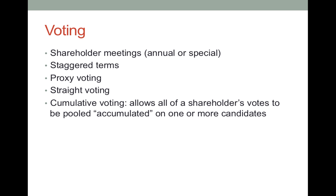Whether a corporation has staggered terms would be something contained in the bylaws. Proxy voting is when you allow someone else to vote your shares. Straight voting is simple majority voting where the majority wins on any particular vote on directors. Cumulative voting, on the other hand, allows shareholders' votes to be pooled or accumulated on one or more candidates so that it increases the power to select at least one director.